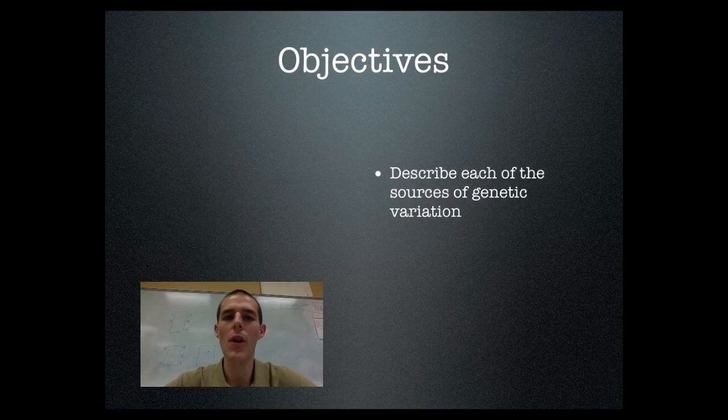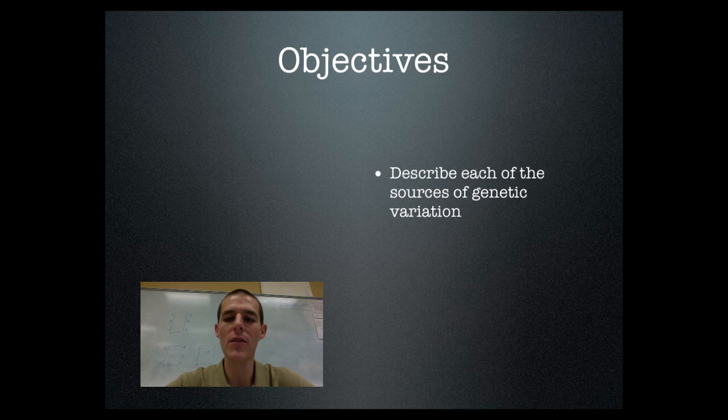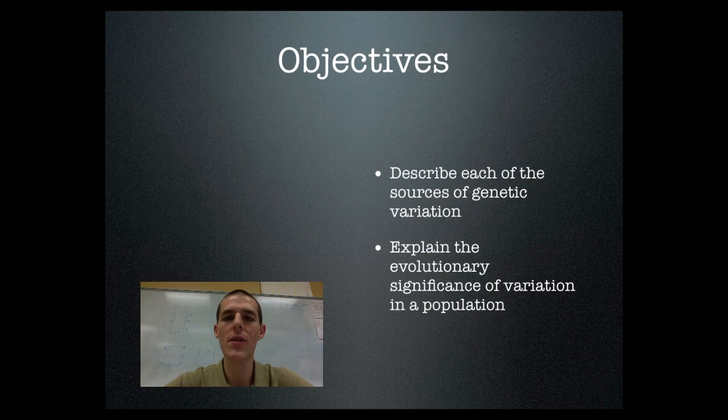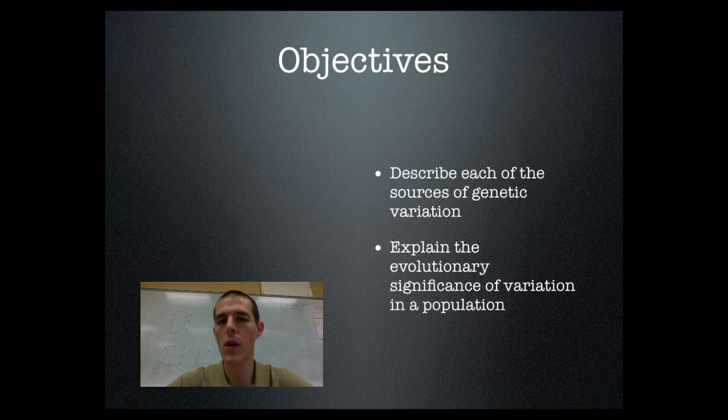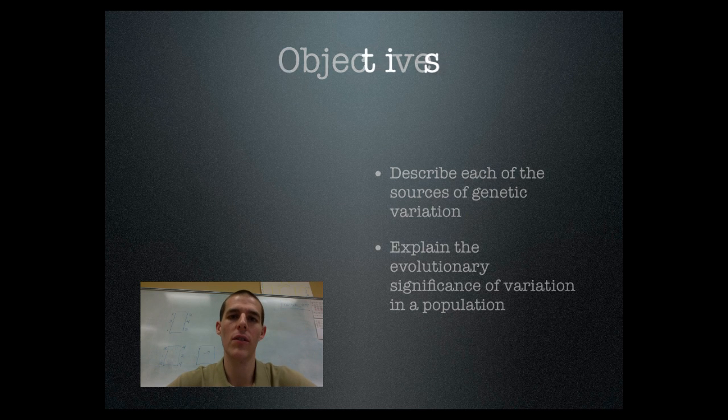First thing I need you to be able to know or do by the end of this video is to describe each of these sources of genetic variation. There are three of them, and the other thing I need you to do is connect that variation to evolution. Why is variation important for evolution? So without further ado, let's do a quick overview and then talk about our sources of variation.